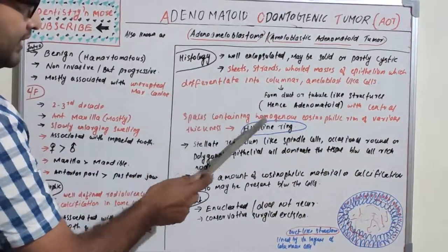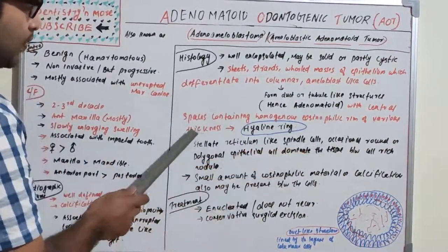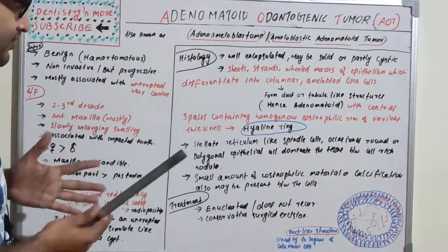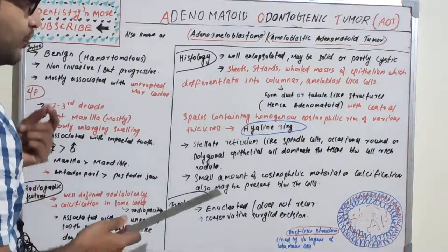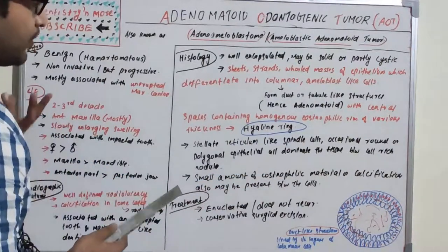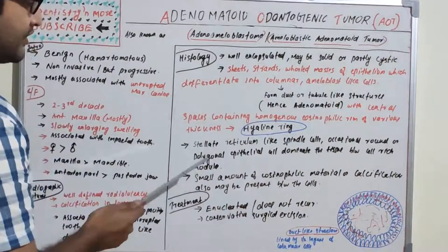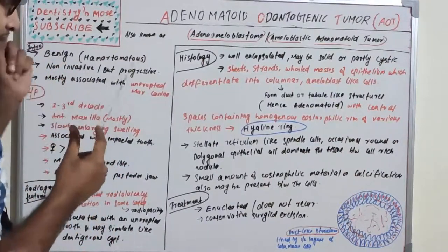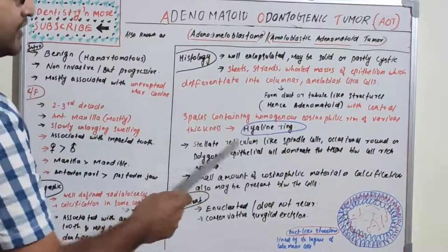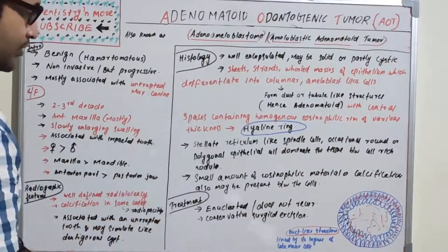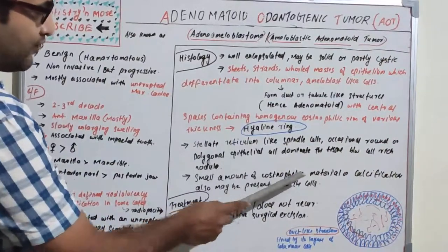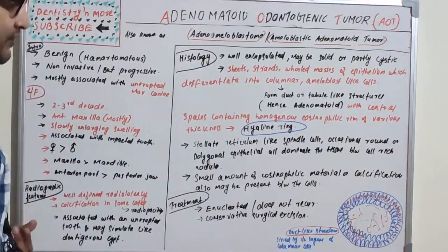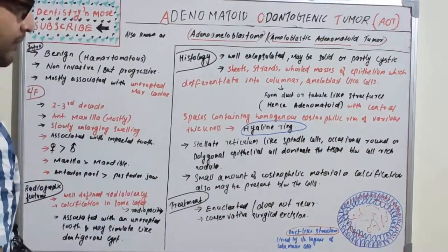The duct-like structure has a central space containing a homogeneous eosinophilic rim of various thickness, particularly known as the hyaline ring. Other features include stellate reticulum-like spindle cells, occasional round or polygonal epithelial cells dominating the tissue between cell-rich nodules, and a small amount of eosinophilic material or calcification may also be present between the cells.